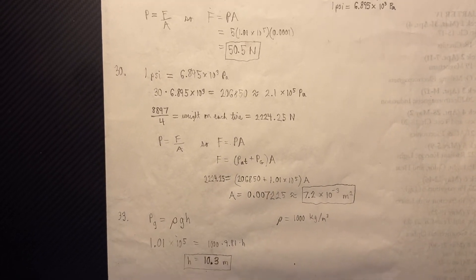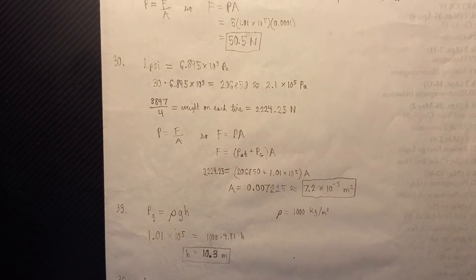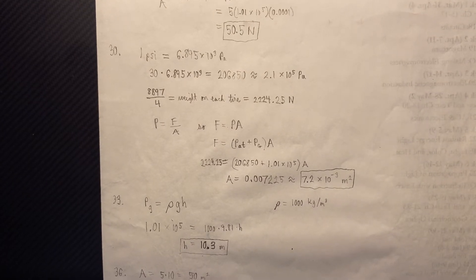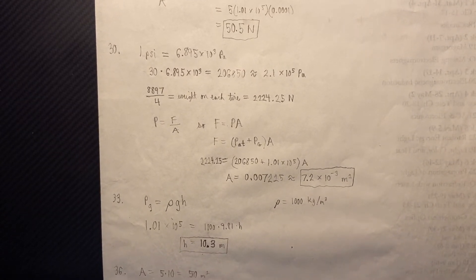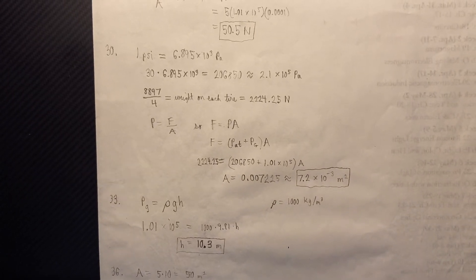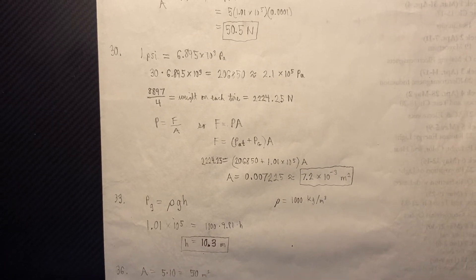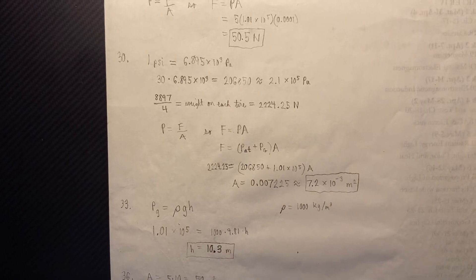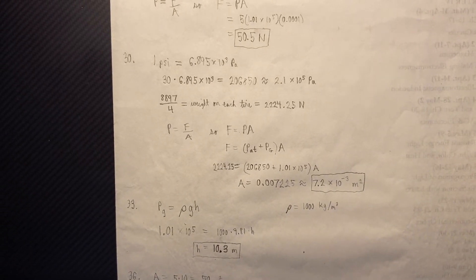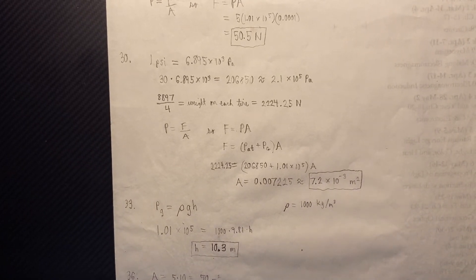Now, number 30, the weight of the car is going to determine the surface area of the tire's contact with the ground. So let's start by converting 1 psi to pascals. 1 psi is 6.895 times 10 to the 3rd pascals.